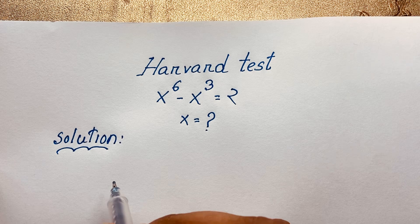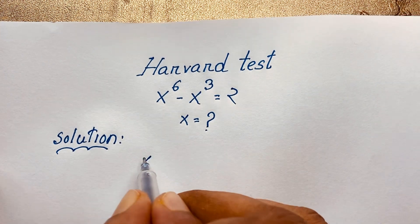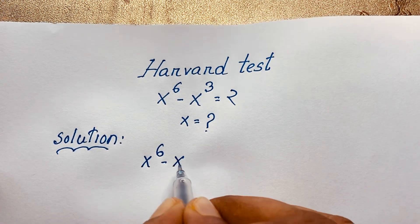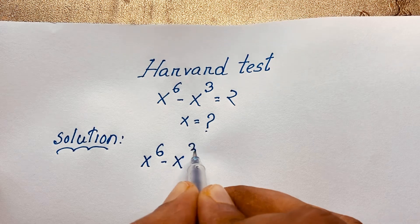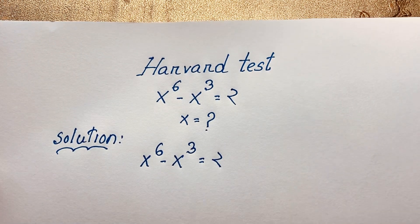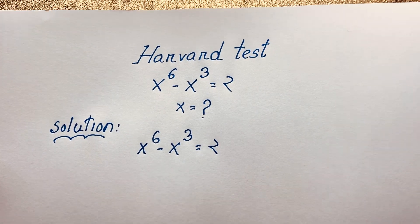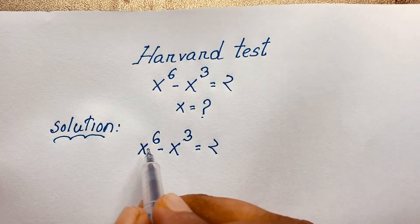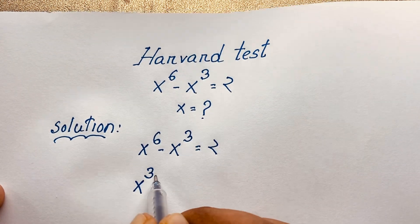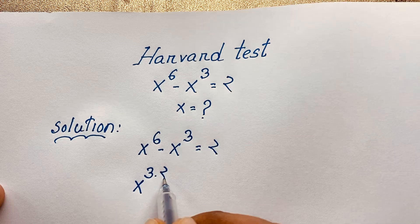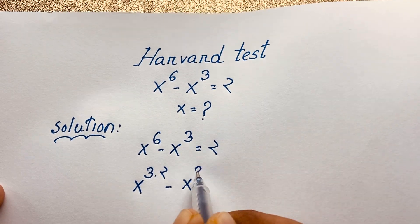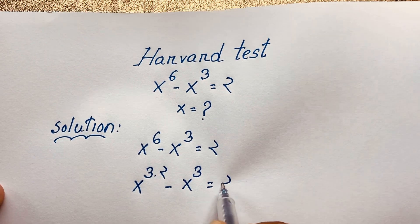Our question is x to the power 6 minus x to the power 3 is equal to 2. Now, at this moment, x to the power 6 — you can see that it will be x to the power 3 times 2 — minus x to the power 3 is equal to 2.